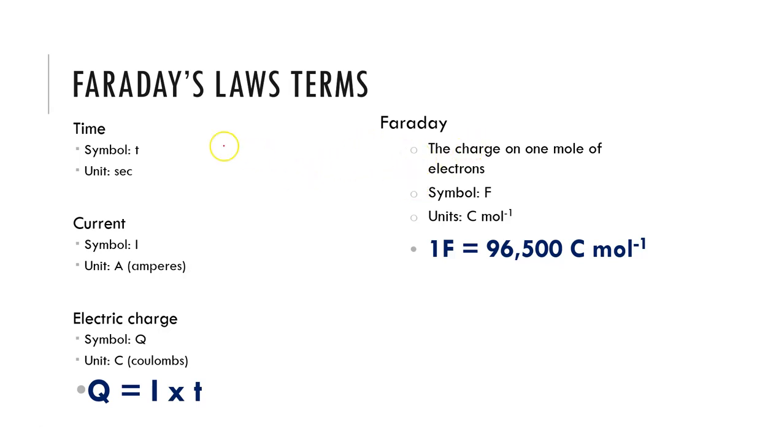When we look at Faraday's laws, we need to consider a number of different terms. This is we need to know time. This is given the symbol lowercase t and we use the unit of seconds. So anytime you are going to see time you are going to need to convert this into seconds. Remembering that there is 60 seconds in one minute, and then of course 60 minutes in one hour. Remembering that you can convert between these.